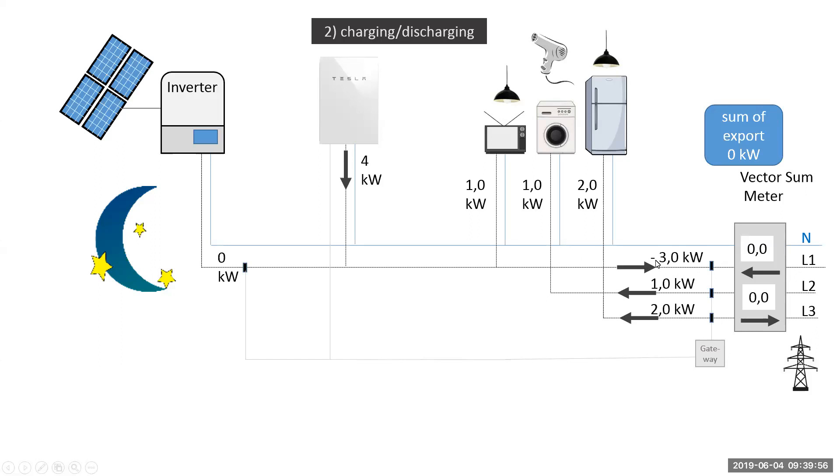In this case, it will actually mean that three kilowatts is going out on L1, one kilowatt coming in on L2, and two kilowatts coming in on L3. Again, meaning the net sum export import of the vector sum meter is zero.